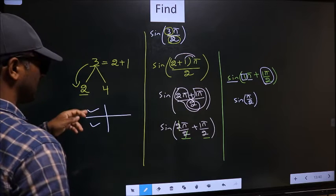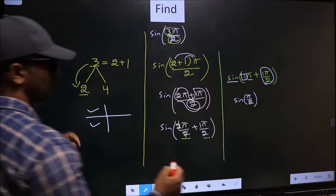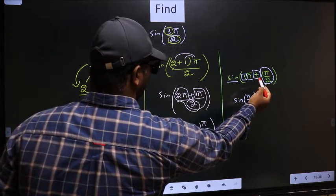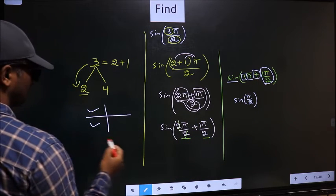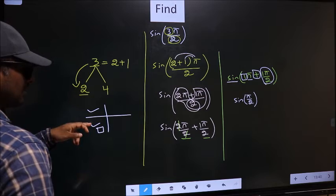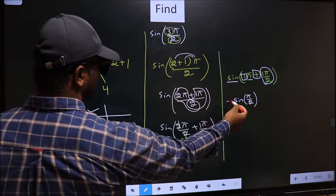So now to select in which quadrant does it lie, we should look at this symbol. Here we have plus. So the angle lies in the third quadrant. And in the third quadrant, sin is negative. So put negative.